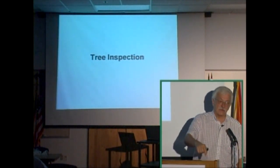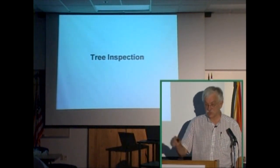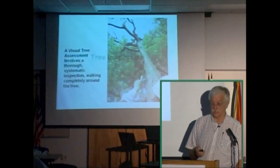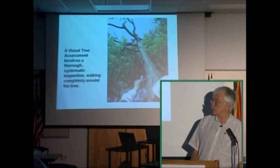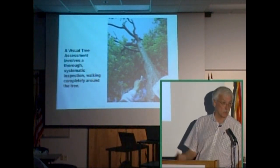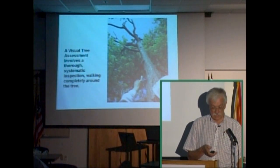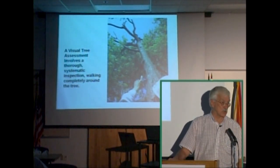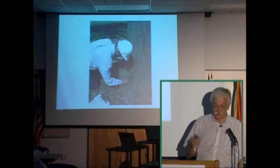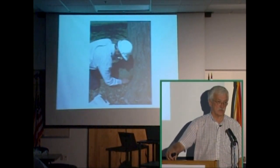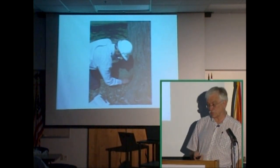In order to determine the likelihood of a tree failing after being put under stress, tree inspections are done. Visual tree assessment is the official phrase the International Society of Arboriculture uses. It involves a thorough, systematic inspection — walking completely around the tree. If you're hired to do a hazard tree assessment, this is where you start. You examine the buttress, the roots, the root flare, and every visible part of the tree.